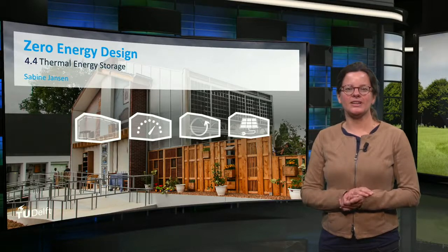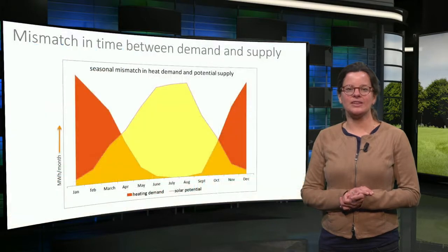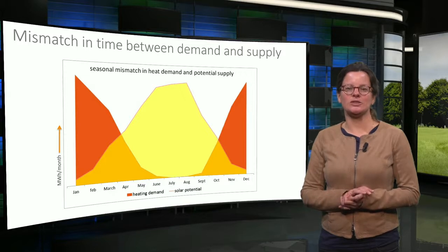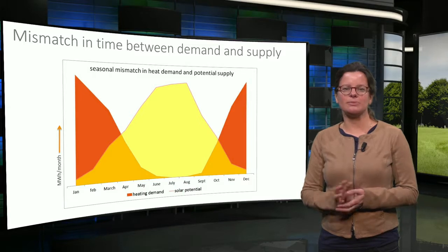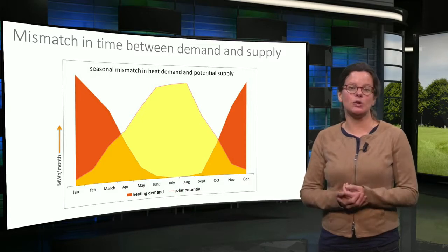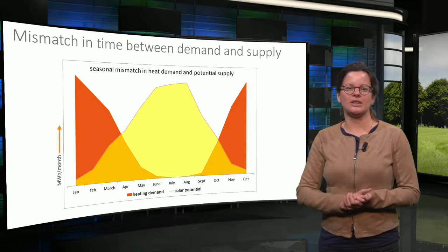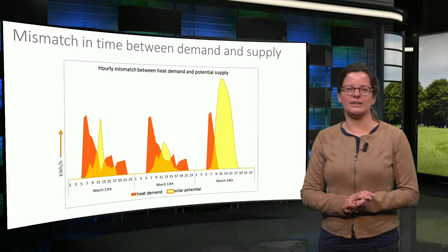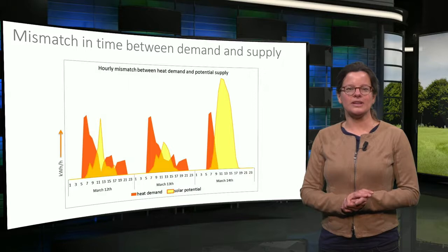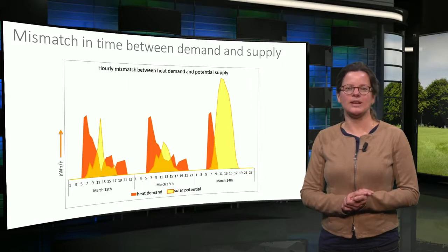Welcome to this lecture on thermal energy storage systems for buildings. As you can imagine, the energy demand does not often occur at the same time energy is produced, especially in the case of renewable energy supply. A very clear example is the seasonal mismatch between heating demand in a relatively cold climate and the solar energy potential in the same climate. But there are also hourly differences between demand and supply occurring each day, as is illustrated in this figure. Thermal energy storage can be used to overcome this mismatch and to make better use of the energy potentials.